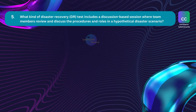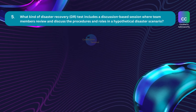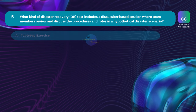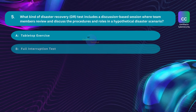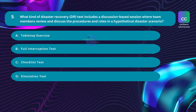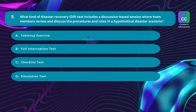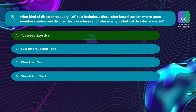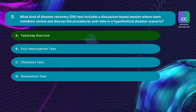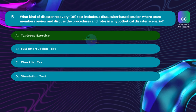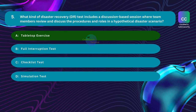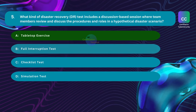Question number five: What kind of disaster recovery test includes a discussion-based session where team members review and discuss the procedures and roles in a hypothetical disaster scenario? Option A: Tabletop Exercise. Option B: Full Interruption Test. Option C: Checklist Test. Option D: Simulation Test. The correct answer is Option A, Tabletop Exercise. A tabletop exercise is a type of disaster recovery test that involves a discussion-based session. It simulates a hypothetical disaster scenario in a relaxed, informal setting, where team members review and discuss their roles, responsibilities, and the steps they would take to respond.